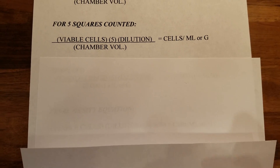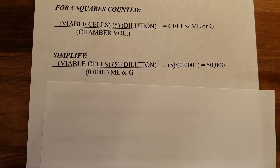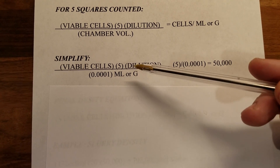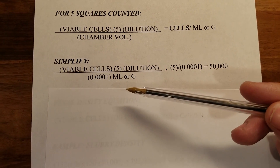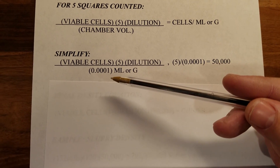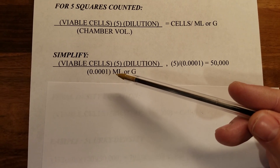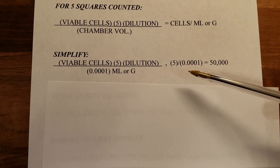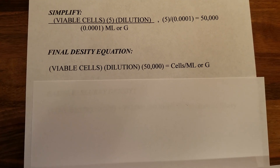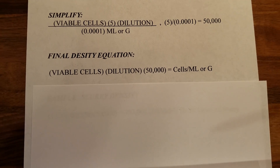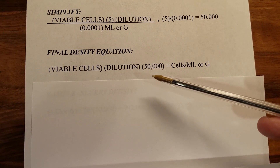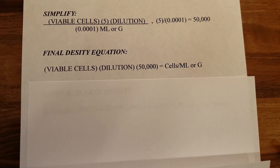Now let's simplify this so we can commit it to memory more easily. What doesn't change between batches? It's the five and the chamber volume. Most hemocytometer chamber volumes are 0.0001 milliliters. Since those two values are always static, we can simplify: five divided by 0.0001 equals 50,000. So the final density equation — the one I have committed to memory and use almost daily — is: viable cells counted times dilution times 50,000, which gives you cells per milliliter or cells per gram.